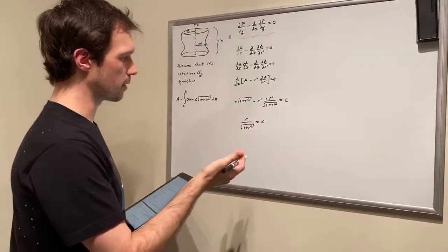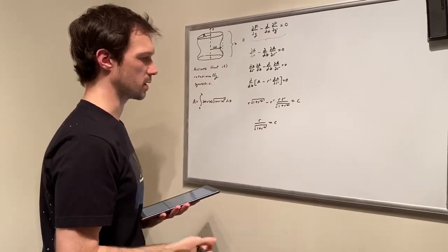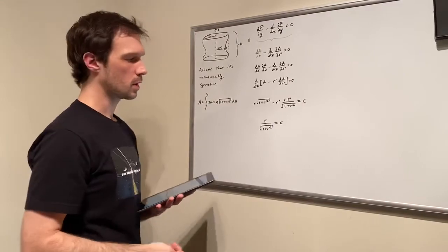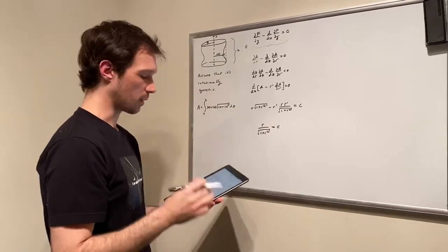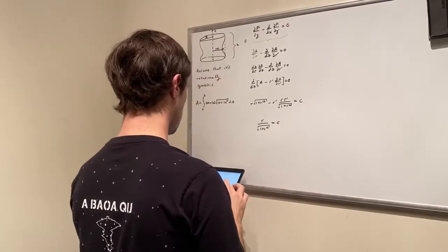Now if you think of it a little bit this is pretty easy to solve because the R prime is actually just dr by dz. So what we can do is we can rearrange this a little bit to come up with an integral and this will look something like this.